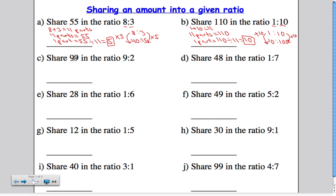Let's have a look at C. Share 99 in the ratio 9 to 2. So step 1, add the ratios together. 9 plus 2 gives me 11. So I know that 11 parts must be equal to the total amount, 99.